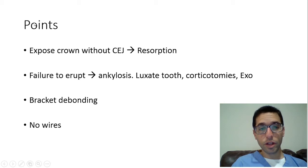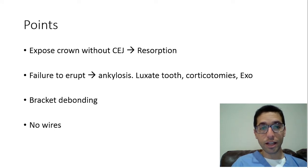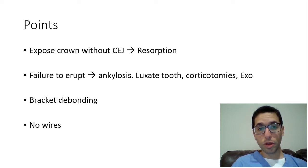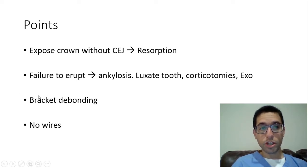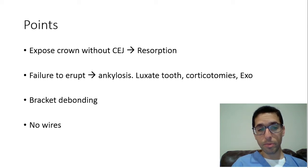What happens if the tooth fails to erupt? Sometimes you expose and bond, put a bracket on, and then instead of the tooth erupting into proper position, all the other teeth the wire is attached to start to intrude — the tooth is acting as an anchor, meaning it's ankylosed. Once you suspect ankylosis, you can go back in and luxate the tooth, or do corticotomies to facilitate the ortho. If you're ready to give up, you can always extract. Also, the bracket can debond. Historically, wires were placed around the tooth, but those go around the CEJ and cause resorption, so that's not done anymore.